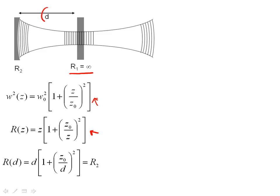And if our mirrors are spaced a distance d apart here so that the cavity is stable, we could just go ahead and substitute d for z into this equation. And from this, knowing that R of d, the distance is R2,